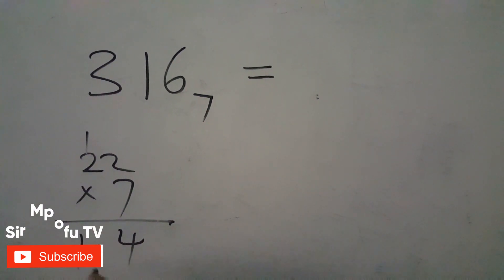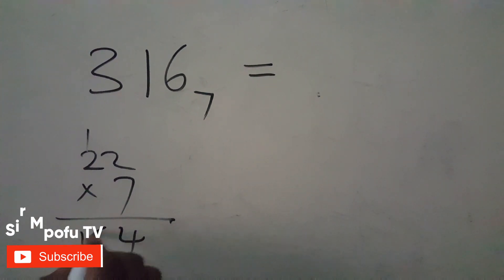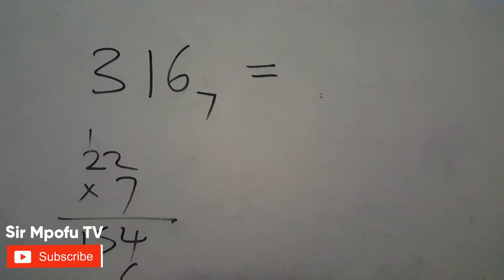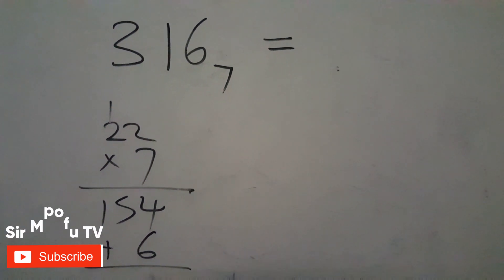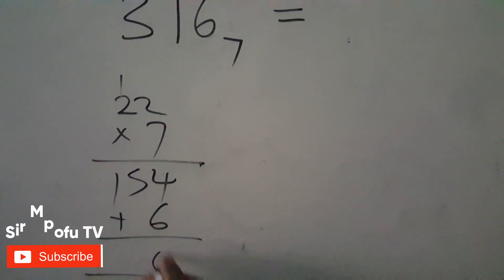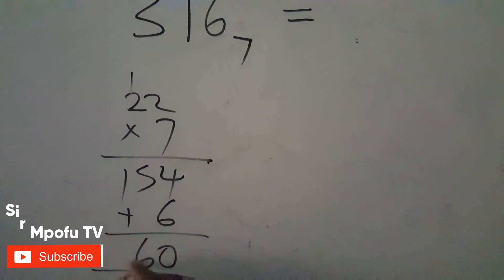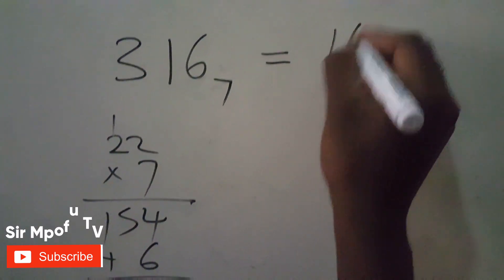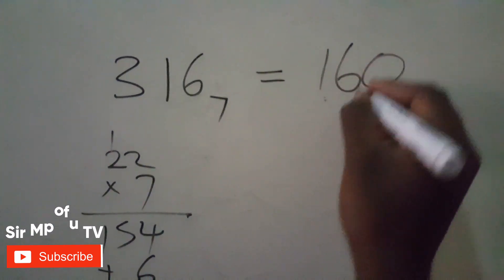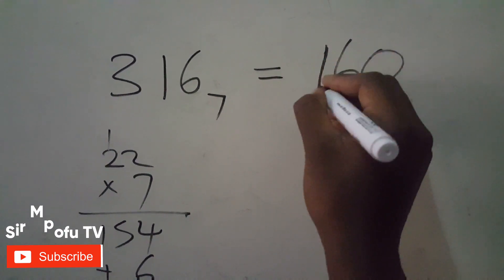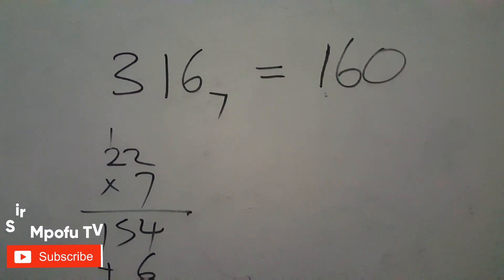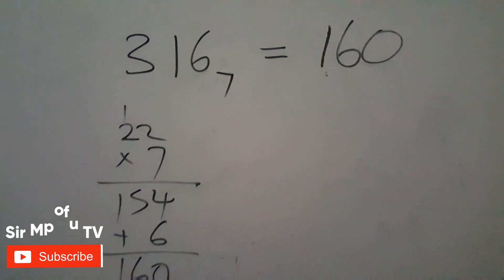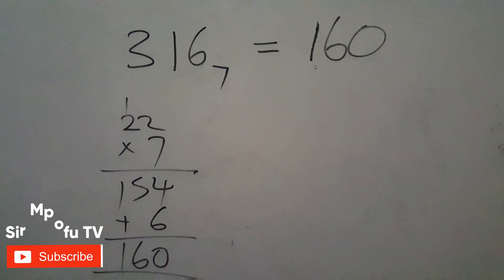Now 22 times seven equals 154, then 154 plus six is 160. So the answer is 160. As I told you, base 10 you can write it or you can leave it out.